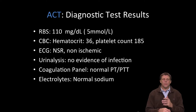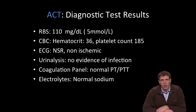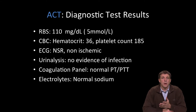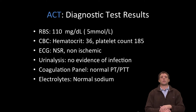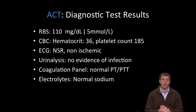The results are in. The rapid blood sugar is normal at 110 mg/dL. The complete blood count reveals a normal hematocrit of 36 and a normal platelet count of 185,000. The ECG is normal, showing normal sinus rhythm and is non-ischemic. Urinalysis reveals no evidence of infection. The coagulation panel is normal with no proclivity to bleed. Electrolytes reveal a normal sodium level. So far, there is no explanation for this patient's altered neurologic function.